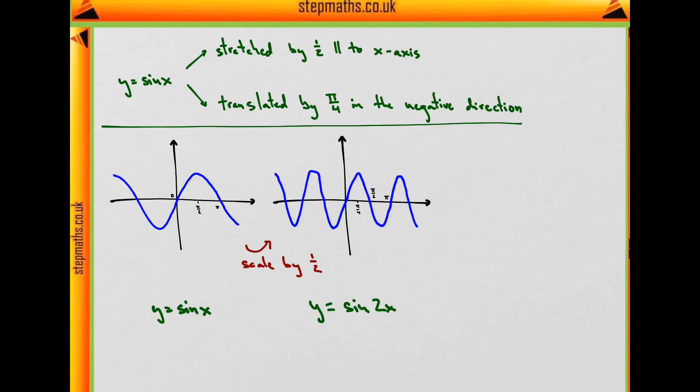So the way I like to think about this, which helps me as a physicist, is to treat this number in front of x as a kind of frequency. The frequency with which the graph wiggles, with which it goes up and down.